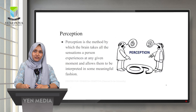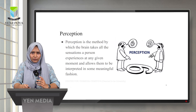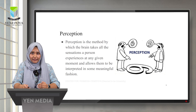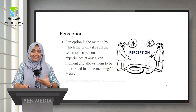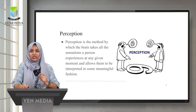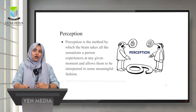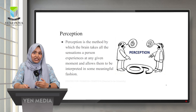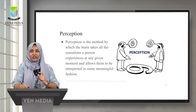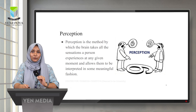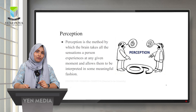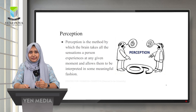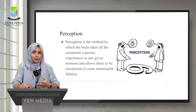Now we will look at perception. We have sensed different aspects, but all these are meaningless on their own — we have to give meaning to the sensations we have perceived. This phenomenon is called perception. In perception, we are giving meaning to sensation — that is, we are interpreting it. Perception is the method by which the brain takes all the sensations a person experiences at any given moment and allows them to be interpreted in some meaningful fashion.